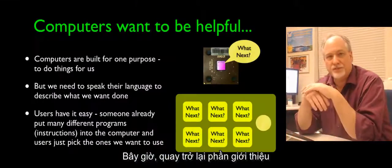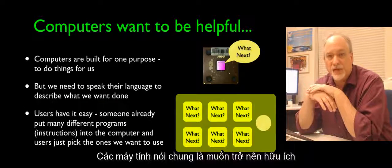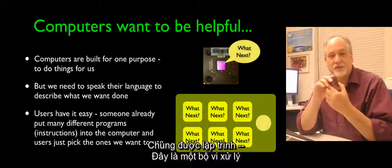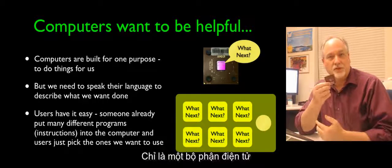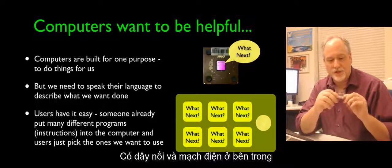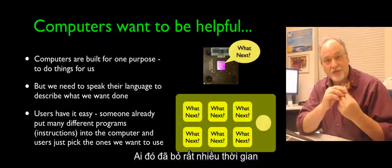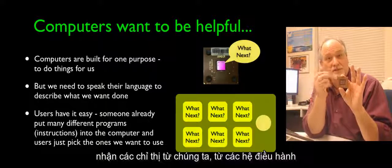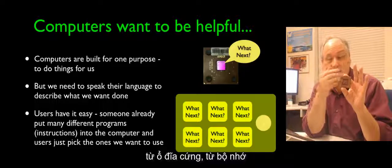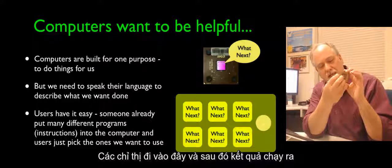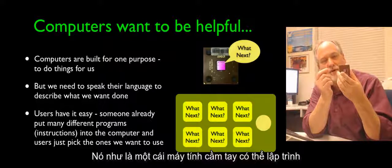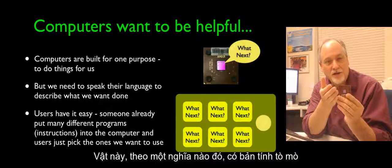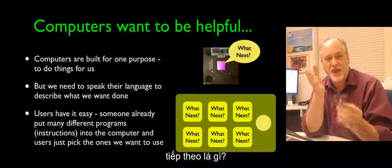So now back to the introduction. Computers basically want to be helpful. They are programmed. This is a microprocessor — it's really just an electrical part with wires and circuits inside. Somebody spent a lot of engineering time to make it so that these pins take instructions from us, from operating systems, from the hard drive, from the memory. Instructions come in and results come out. It's a very programmable hand calculator, and it's our job to put instructions in.